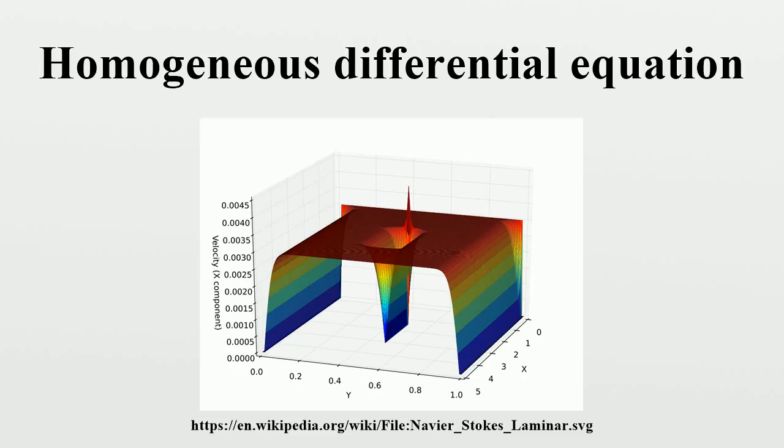For example, the following differential equation is homogeneous, whereas the following two are inhomogeneous. It should be noted that the existence of a constant term is a sufficient condition for this equation to be inhomogeneous.